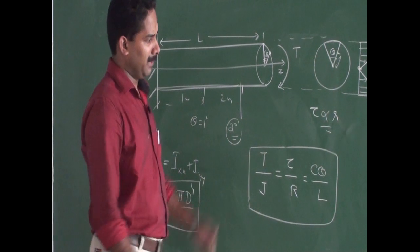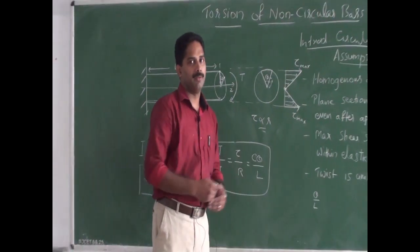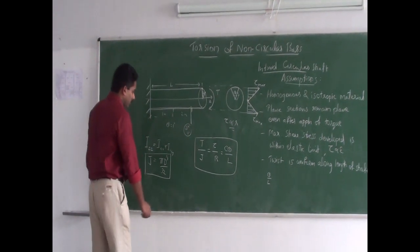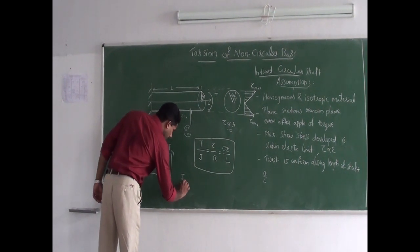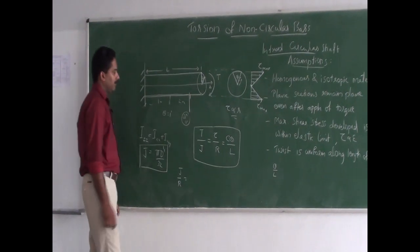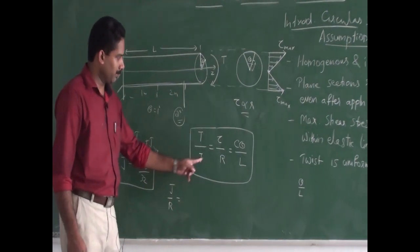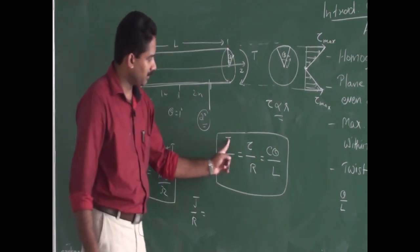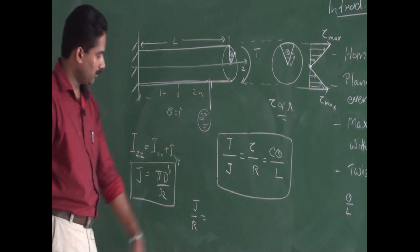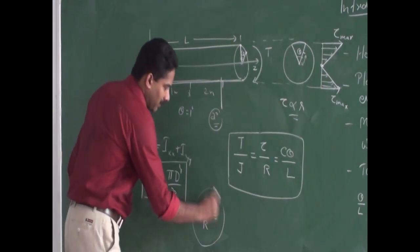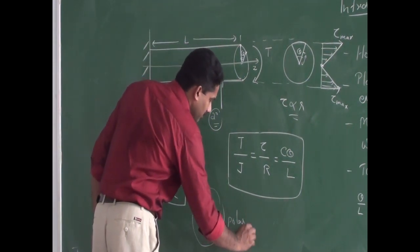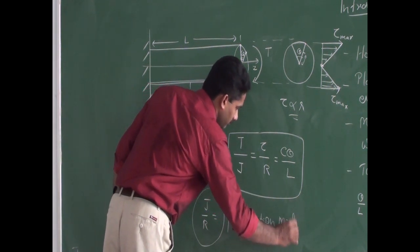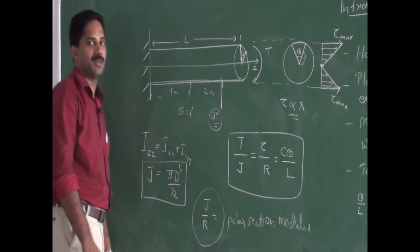Before moving to the non-circular shaft, note that the ratio J by R — which is also equal to T by tau — is called the polar section modulus.